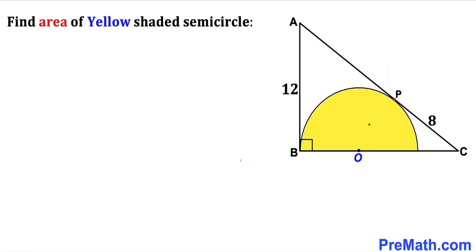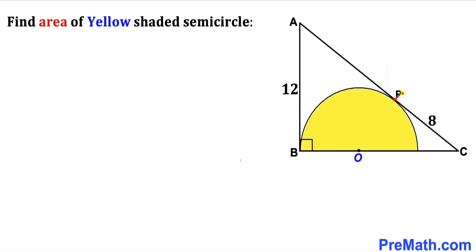Welcome to pre-math. In this video we have a yellow semicircle fully inscribed in right triangle ABC, where point P is the point of tangency and point O is the center of the semicircle. Side length AB is 12 units and side length PC is 8 units. We are going to calculate the area of this yellow shaded semicircle.